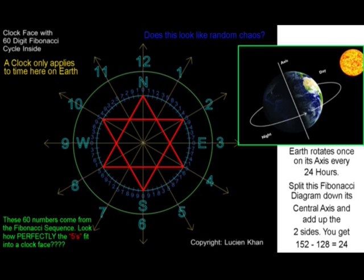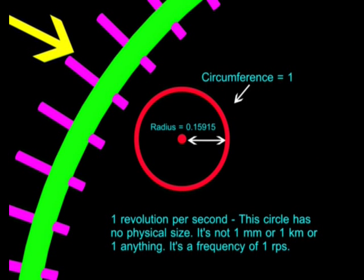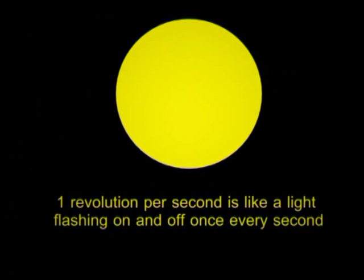One second has no real size or measurement. It is simply a ratio determined by how many times it fits into our Earth's cycle of one revolution per day. One second is traditionally our smallest quanta, or packet of time, that we use in our standard clocks. We can, of course, break one second up into smaller units of nanoseconds and so on, but we use seconds because this ties in perfectly with mathematics, as we have seen. You must remember that this one revolution per second has no physical size. It is only a ratio representing a quanta of time. It doesn't mean that light takes one second to travel around the circumference of this tiny circle. This circle has no size. It represents a frequency of one revolution per second, compared to a light flashing on and off at a frequency of one flash per second.